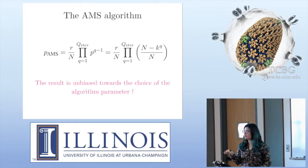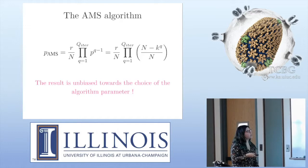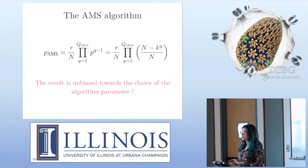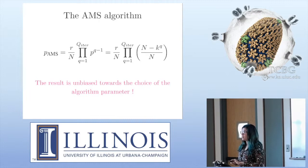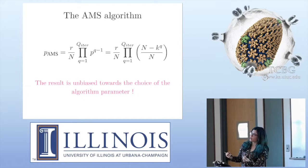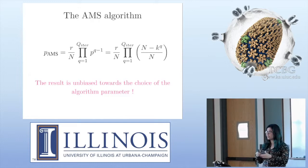This gives us the estimation of the probability with AMS. There is a mathematical proof that the expected value of this estimation is equal to the real probability. Importantly, this result is unbiased — you can change the parameters of the algorithm and always obtain the correct value. The only thing that changes is the variance. You can look at the references in the tutorial for more details.